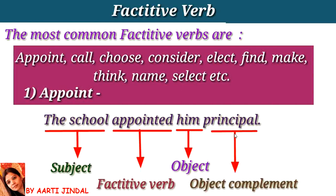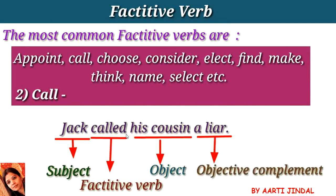The next verb is call. Example: 'Jack called his cousin a liar.' Here, 'Jack,' which is a noun, is the subject. 'Called,' the past form of call, is the verb. 'His cousin' is the object. 'A liar' — liar, which is a noun, is the objective complement, used to describe and rename the object.